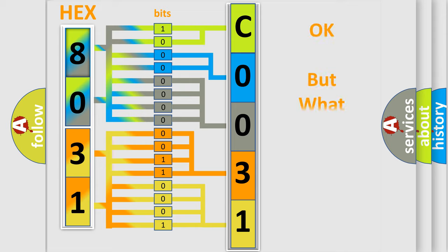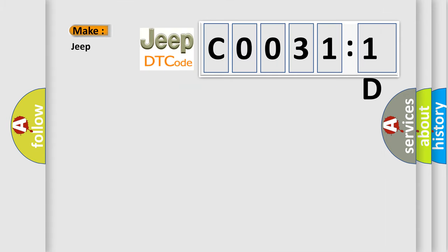The number itself does not make sense to us if we cannot assign information about what it actually expresses. So, what does the Diagnostic Trouble Code C00311D interpret specifically for Jeep car manufacturers?